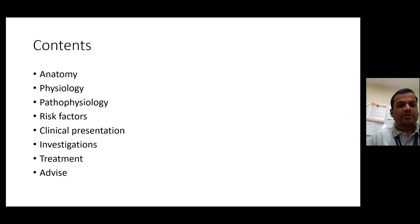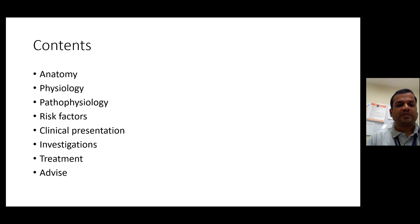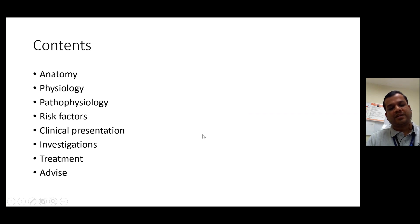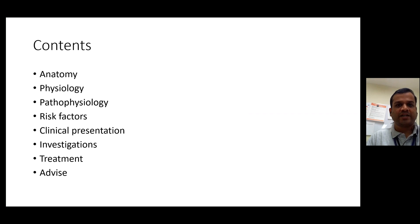Let's go through how we'll proceed. We'll first discuss the anatomy, then the physiology, and subsequently the pathophysiology — why people get urinary tract infections, what the risk factors are, the clinical presentation, the investigations, and then treatment and advice on how to advise someone with UTI or recurrent UTI.